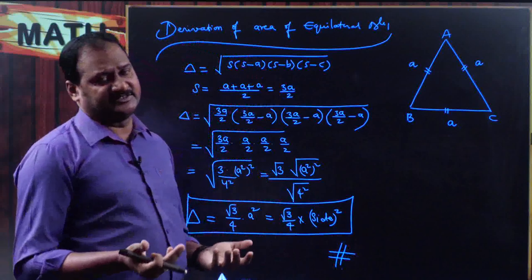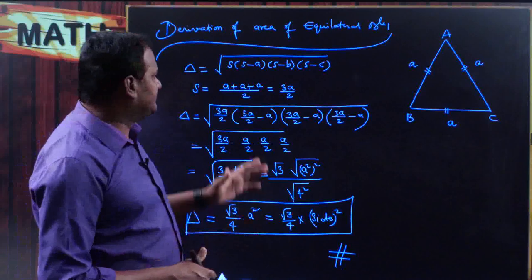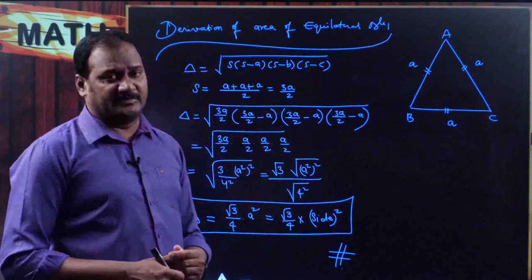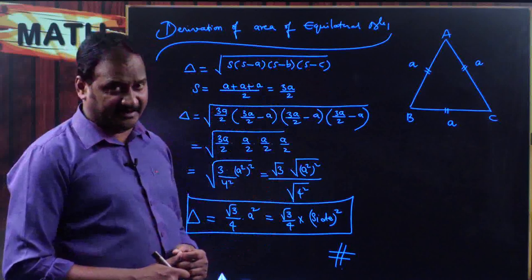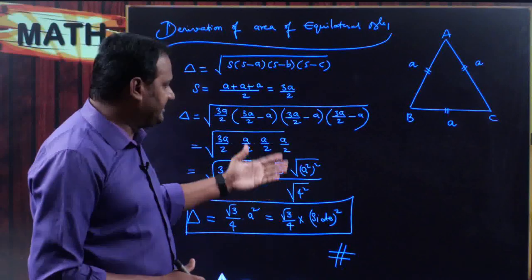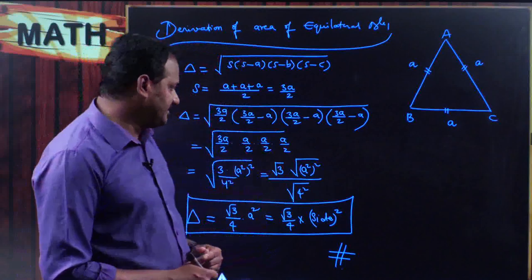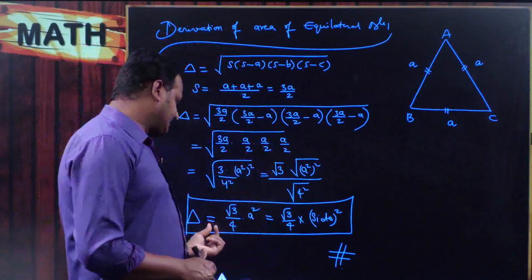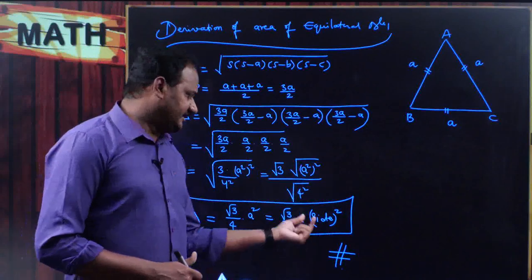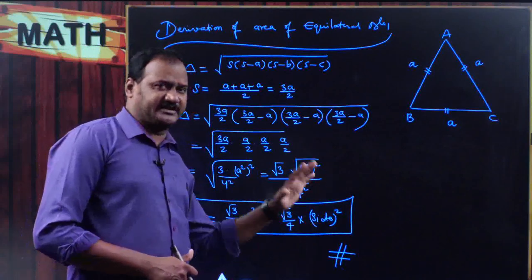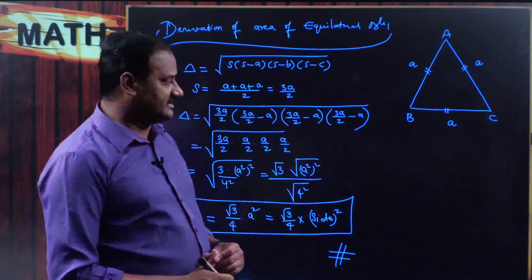Of course, we have other ways to derive the formula for area of equilateral triangle also. We learnt the formula for area of triangle when all three sides are given by Heron's formula, and this is one of the ways to derive the formula for area of equilateral triangle. Please remember: the formula for area of equilateral triangle is root 3 by 4 times side squared. The side can be anything, but it should be root 3 by 4 times side squared.